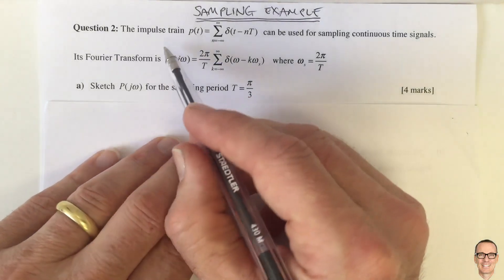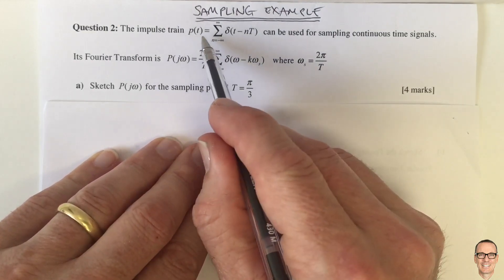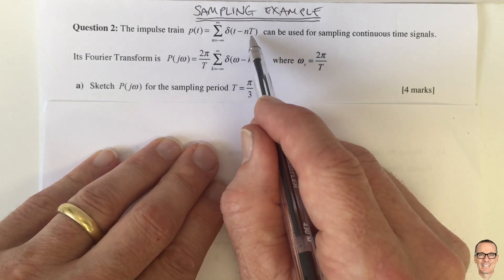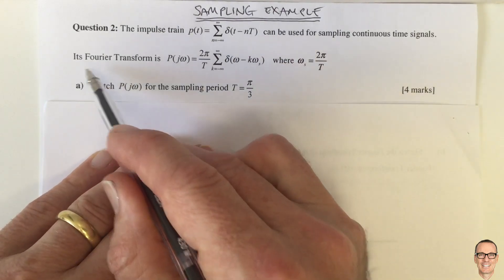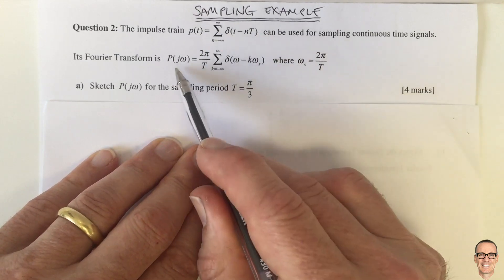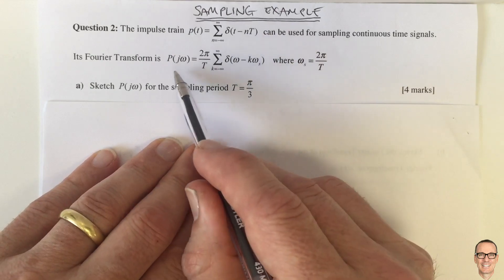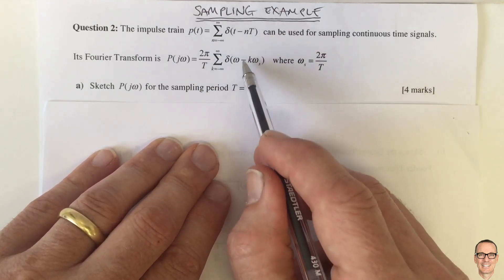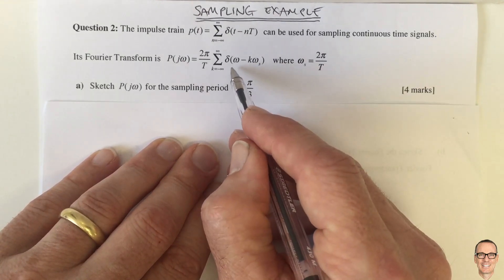Here's a sampling example. We have a sampling impulse train in the continuous time domain, which is a summation of delta functions separated by capital T — the period of sampling. The Fourier transform of this sequence of delta functions, which performs the sampling in the time domain, is also a sequence of delta functions in the frequency domain. You can confirm this using standard Fourier transform tables.